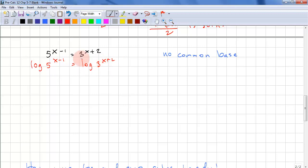Now we bring the exponents out front. So we have (x-1)·log(5) = (x+2)·log(3). Make sure you have brackets here because it's incorrect to say x + 2 × log(3). So now we expand.